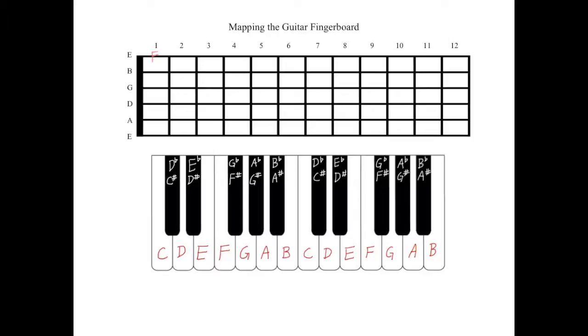Returning to the piano, we can see that F to F sharp or G flat is a half step. Therefore, the next note on the high E string of the guitar will be F sharp or G flat. If we continue to compare the piano to the guitar, we will see that the next note that's a half step up is G, then G sharp or A flat, then A, then A sharp or B flat, then B.